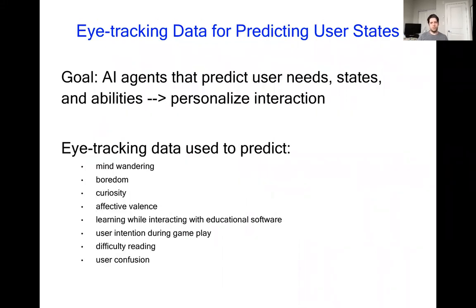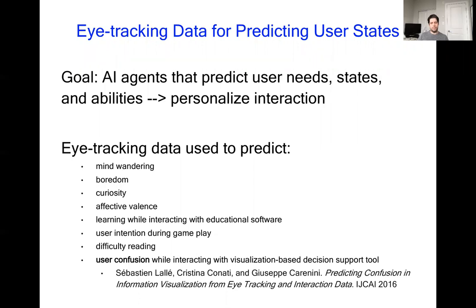Recently there's been a lot of interest in the idea of AI agents that can predict user needs, states, and abilities and personalize interaction accordingly. In particular, eye tracking data has been used to predict a variety of states such as mind-wandering, boredom, curiosity, difficulty reading, and user confusion. This last one is the subject of this paper.